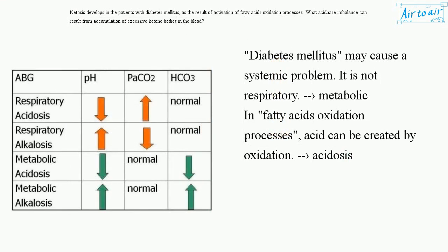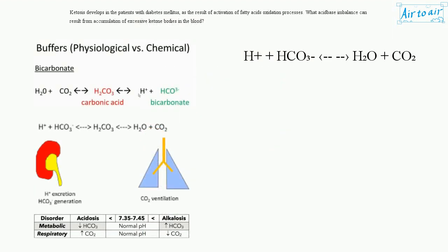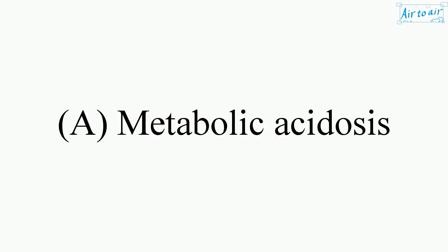Diabetes mellitus may cause a systemic problem — it is metabolic, not respiratory. Fatty acids oxidation processes create acid. Acidosis: H+ + HCO3 → H2O + CO2. The answer is A. Metabolic acidosis.